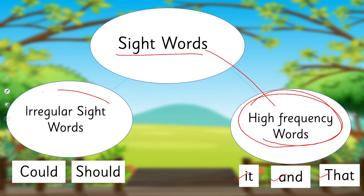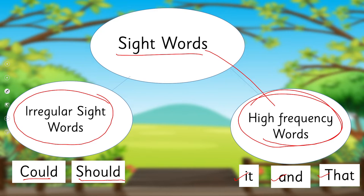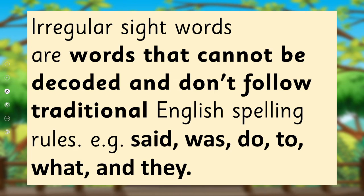The other type of sight words is irregular sight words. You just read them — 'could,' 'should.' So what is the difference between these two? I'm going to tell you what irregular sight words are.